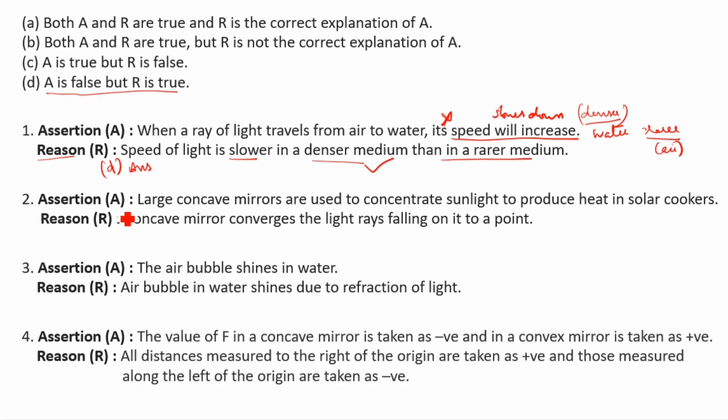Second question assertion: Large concave mirrors are used to concentrate sunlight to produce heat in solar cookers. Yes, correct, concave mirror converges the light rays falling on it to a point. Yes, converge only. Convex is diverge. So this is also correct.